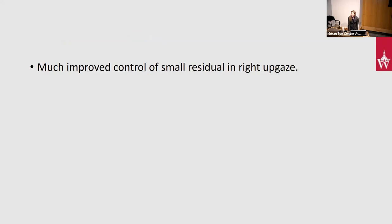She woke up — the main concern was not over-correcting her in downgaze or primary. By adding an additional millimeter, good alignment was achieved. Her limitation in elevation really resolved, stereo improved to 9 out of 9, and she was very happy. Colleagues are asked whether they use the Lancaster red-green here — they don't and don't have the dots on the wall. It is time-consuming but rewarding; it's a fun test for a fellow to do. Double Maddox rods are a go-to for fourth nerve palsy, but in borderline hyper cases where the patient isn't fusing even two diopters of prism, the Lancaster red-green can reveal surprising torsional patterns. It's definitely a test best suited for adults.